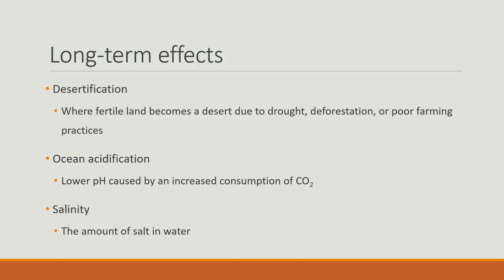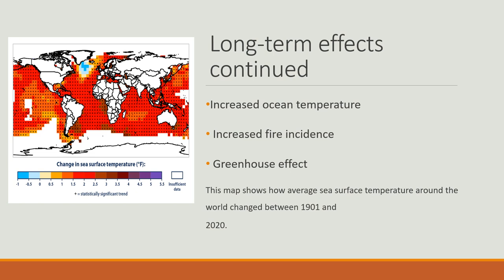Some long-term effects are desertification, where fertile land becomes a desert due to drought, deforestation, or poor farming practices. We have ocean acidification, which is a lower pH caused by increased absorption of CO2. We have changes in salinity, which is the amount of salt in the water. We have increased ocean temperatures — this map shows how the average sea surface temperature around the world has changed between 1901 and 2020, with an average increase of 1 to 3 degrees Fahrenheit. We also have increased fire incidence and, of course, the greenhouse effect.